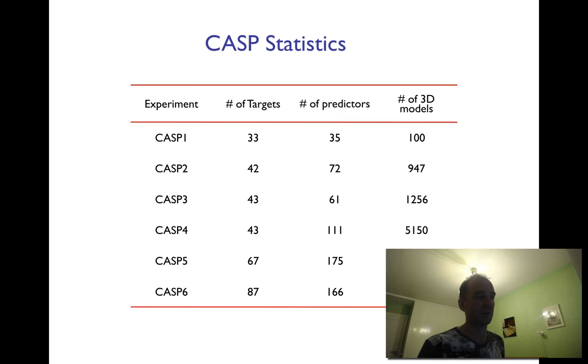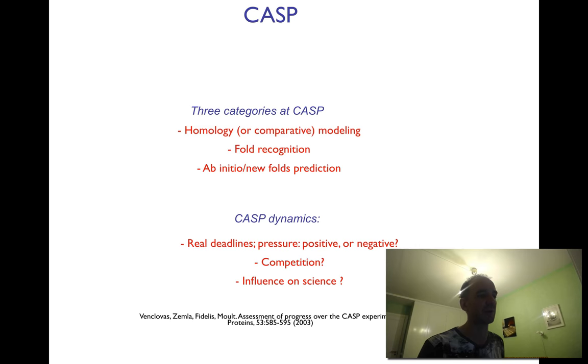Nowadays there are around 100 targets, though in the beginning it was a bit less. There are a few hundred predictors, plus major servers, and hundreds of thousands of 3D models submitted every time.